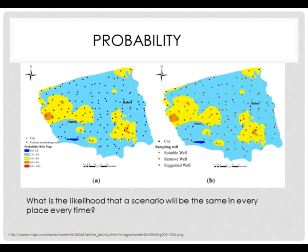For example, we would look at probability based on certain conditions and map it out over space. In map A, we see a probability risk map that shows a rating scale and areas of high versus low probability. In map B, we see areas of well sampling and conditions, and you can then interpolate — that is, estimate over space — the likelihood that certain conditions will yield certain results.